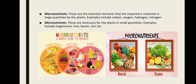Macronutrients are the essential elements required in relatively large quantities by plants. Examples include carbon, oxygen, hydrogen, and nitrogen. Micronutrients are necessary for plants in small quantities. Examples include magnesium, iron, boron, and zinc.